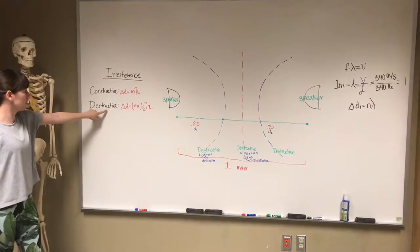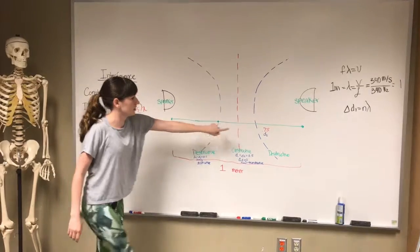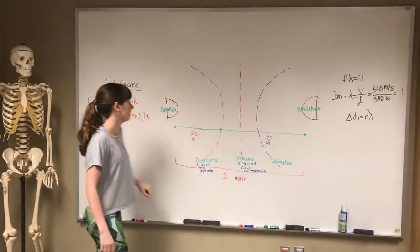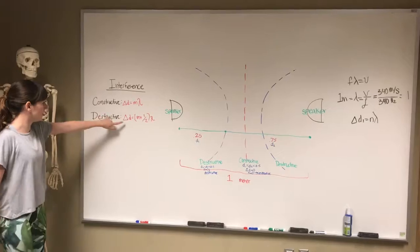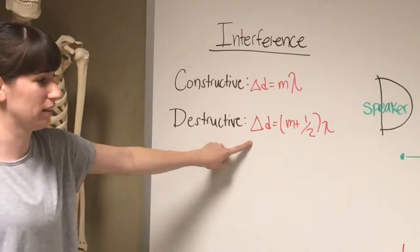And then we have destructive interference, which is the blue line right here, which is right here and right here, 0.25 and 0.75. And the pattern equation we're going to use is this one right here for path length difference.